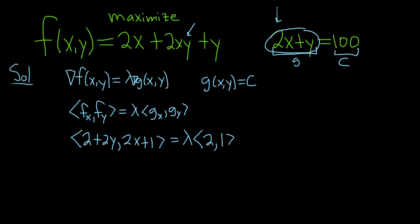Okay, so we did some math here. So we have 2 plus 2y, comma, 2x plus 1, and then we have our angle bracket, and that's equal to, you can distribute the lambda, so this is 2 lambda, lambda, all right, good stuff.